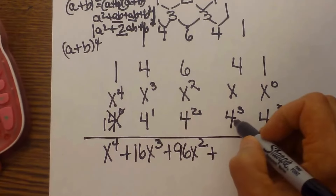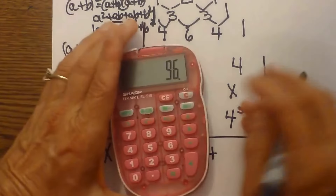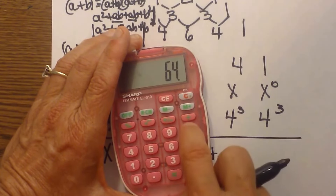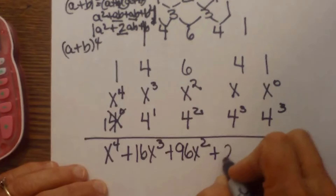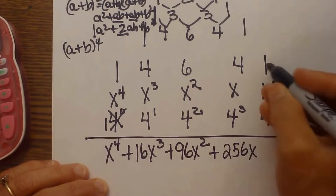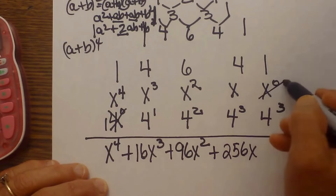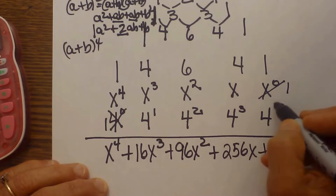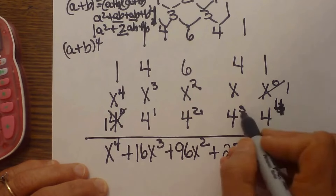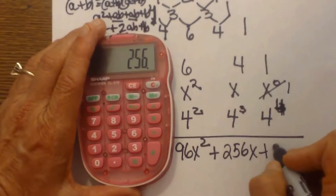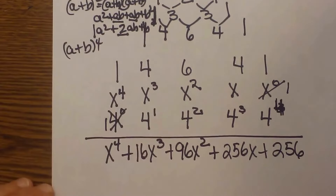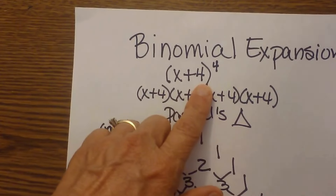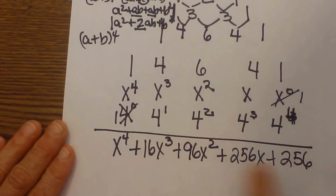The next term is four cubed times four, which is four to the fourth. Four cubed is 64, and times four is 256, so that term is 256x. And then the last term is one times x to the zero — that's just one — times four to the fourth, which is 256. So our final expanded answer is x to the fourth plus 16x cubed plus 96x squared plus 256x plus 256. That is how you expand x plus four to the fourth power using Pascal's Triangle.